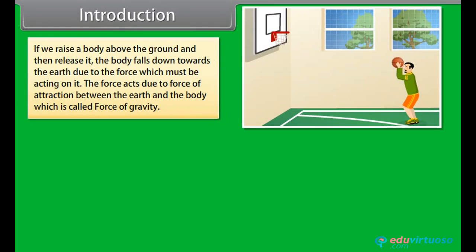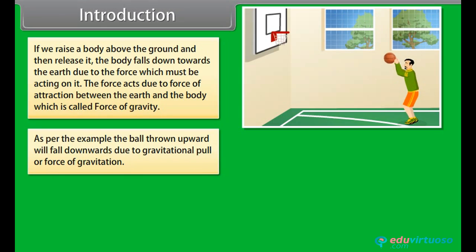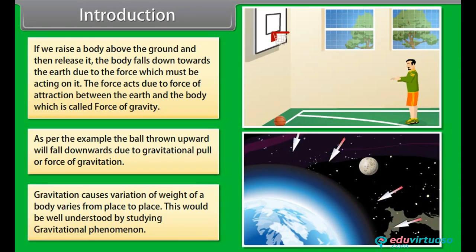Introduction: if we raise a body above the ground and then release it, the body falls down towards the earth due to the force acting on it. This force acts due to the force of attraction between the earth and the body, which is called force of gravity. As per the example, a ball thrown upward will fall downwards due to gravitational pull or force of gravitation.